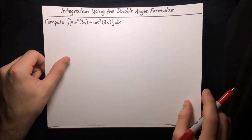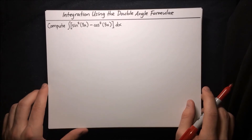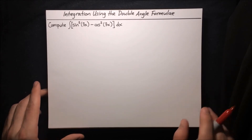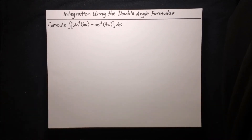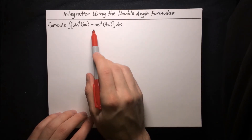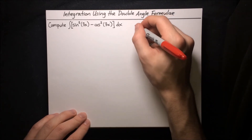Here's our next integral. We want to compute the integral of sine squared of 3x minus cosine squared of 3x. Initially this integral looks pretty tough — it's not even clear how to do this by substitution. But if you remember the double angle formula for cosine, you'll notice that the expression inside the integral looks pretty similar.